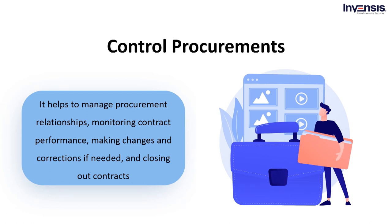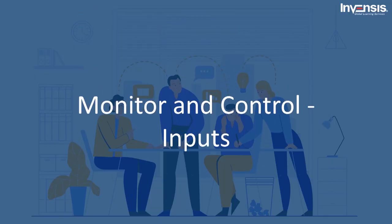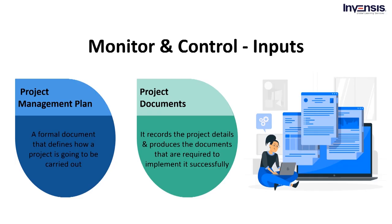Now that we have discussed the monitor and control group processes in detail, let us discuss the inputs, tools, techniques, and outputs involved in monitoring and controlling the project work process. The first input is the project management plan. The project management plan is a formal document that defines how a project will be carried out. The subsidiary plans and project baselines form the foundation for controlling the project, and a project management plan involves focusing on all subjects of the project.